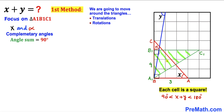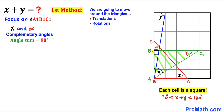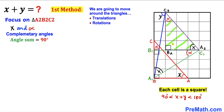Let's focus on the green triangle A1B1C1, which we obtained by rotating and translating the red triangle ABC. After this translation, this angle has become angle x, this angle has become alpha, and this is our 90-degree angle, with side lengths of 3 and 4 units respectively.